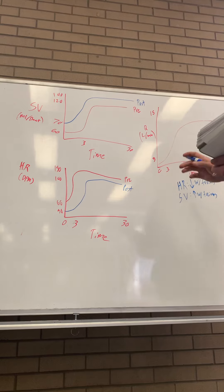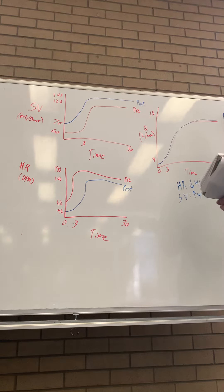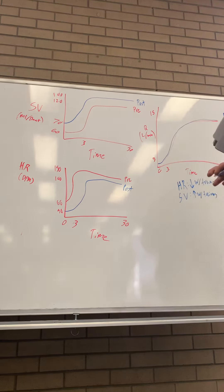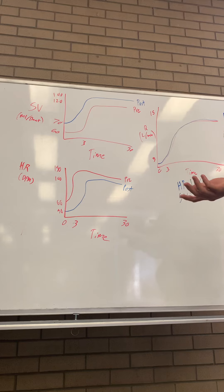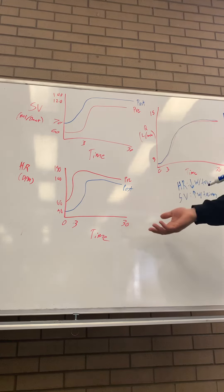This makes your overall cardiac output the exact same as a pre-trained person. Pre-trained and post-trained have the same cardiac output, but the way they get there is different. A more trained person has a more efficient heart with the efficiency of the pump, versus someone who just needs to pump more blood per minute.